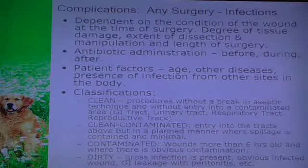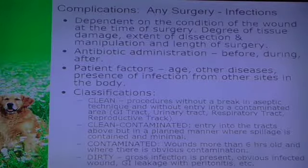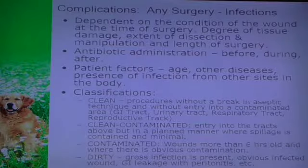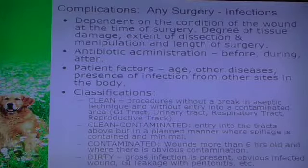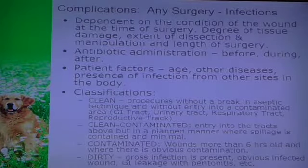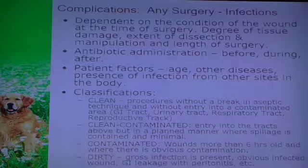Other factors include age, other diseases, and the presence of infection already in the body. If they're already septic - like pyometras - they have a problem getting infected. Cushingoid dogs have a problem getting infected because their immune system is blunted, and older dogs or cats just don't heal as well and have a tendency to get infected.